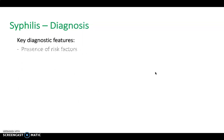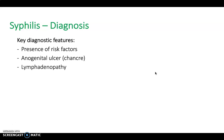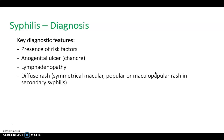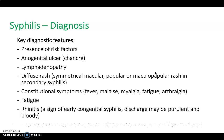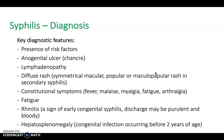For diagnosis of syphilis, patients may be asymptomatic but have a number of risk factors. They may have an anogenital ulcer — diagnostic of primary syphilis — or lymphadenopathy. In secondary syphilis, there may be a diffuse symmetrical macular or maculopapular rash, and constitutional symptoms such as fever, malaise, myalgia, fatigue, or arthralgia. Signs of early congenital syphilis include rhinitis with purulent or bloody discharge, and hepatosplenomegaly.